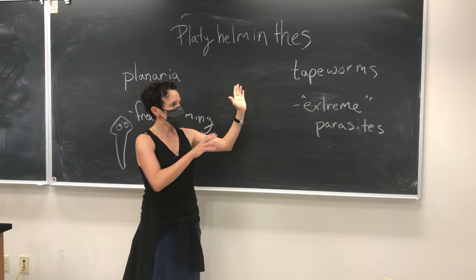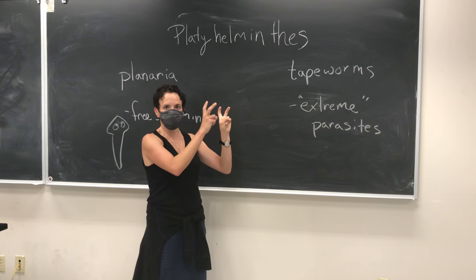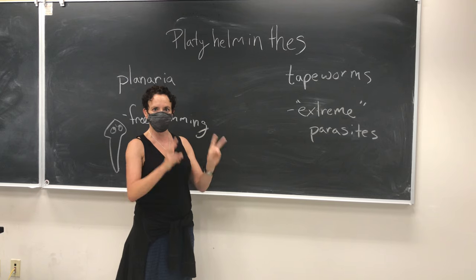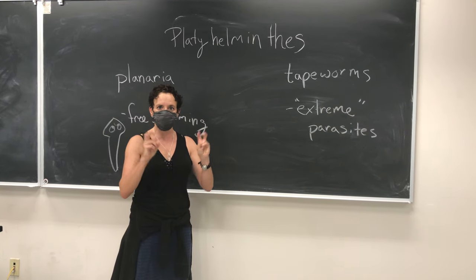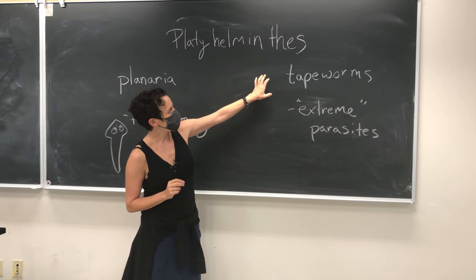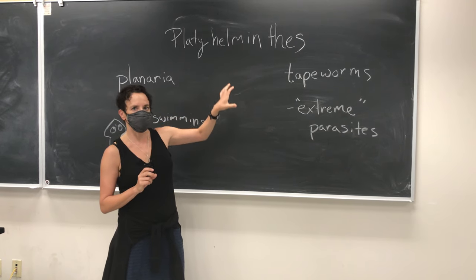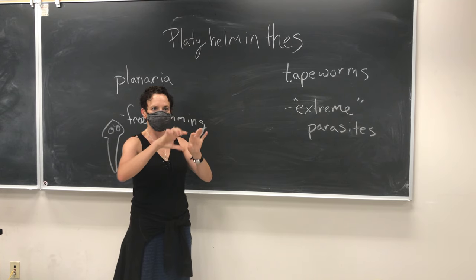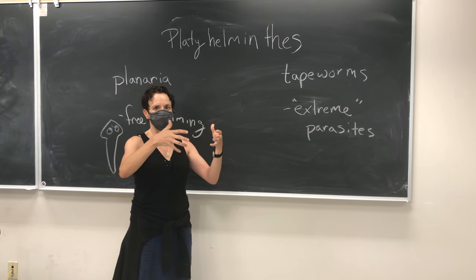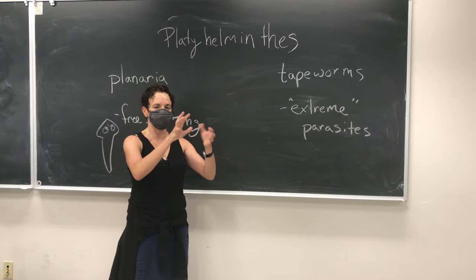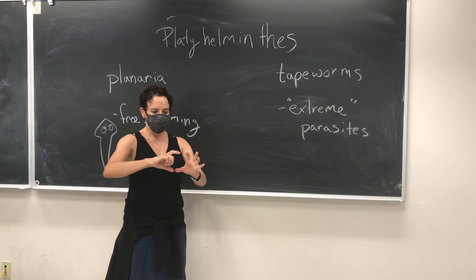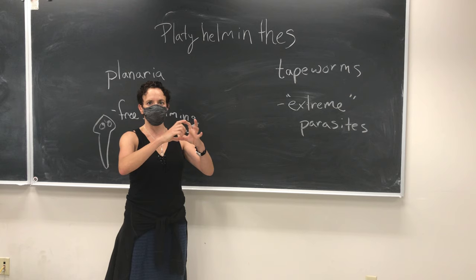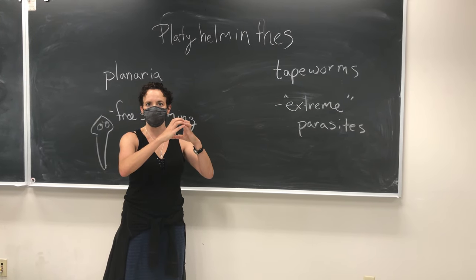As you go from the head, the sections are called immature proglottids, then mature proglottids, and then gravid ones, as labeled in your atlas. The animal grows from the head end and starts developing gonads on the different sections. Those gonads release egg and sperm, which either cross-fertilize or self-fertilize. Finally, the last sections basically just become cases full of eggs.